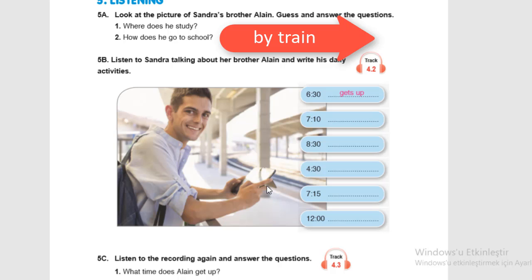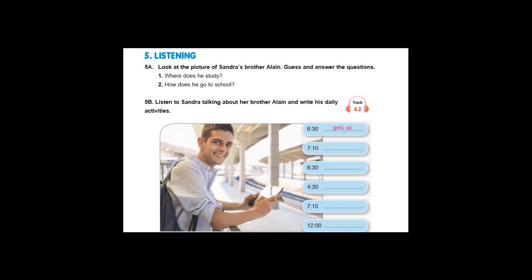Now let's go to activity 5b. It says listen to Sandra talking about her brother Elaine and write his daily activities. We will write about his daily activities. Please listen to the track right now.